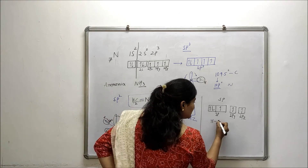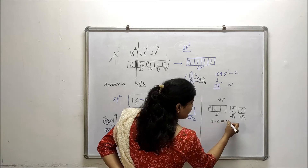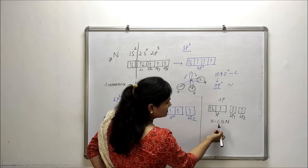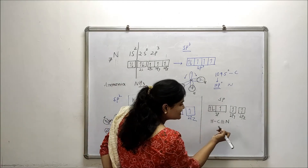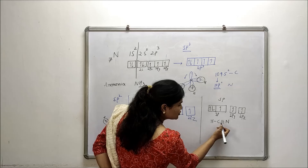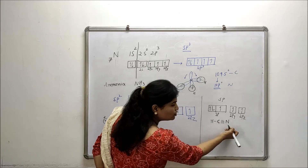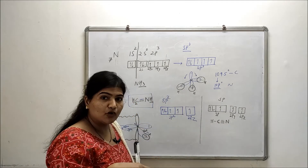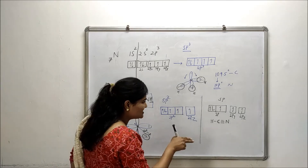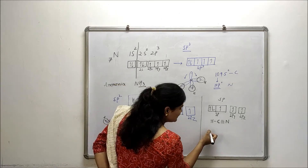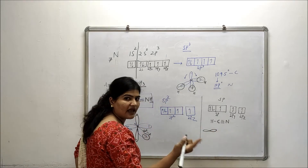Let's discuss the formation of hydrogen cyanide, HCN. In hydrogen cyanide, carbon is bonded to 2 other atoms, so it is in its sp hybridization state. For sp, carbon has 2 hybrid orbitals at 180 degrees and 2 unhybridized py and pz orbitals extending perpendicular to the plane of the hybrid orbitals.